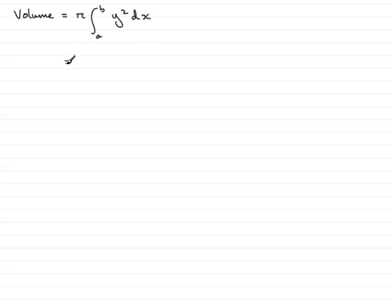And what we know is that y is 1 over 2x plus 1, so if I was to square that I'm going to have 1 squared which is 1 over (2x plus 1) all squared, and that's with respect to x.